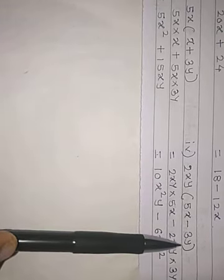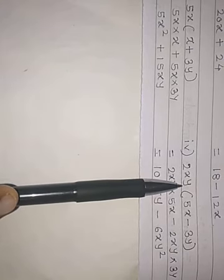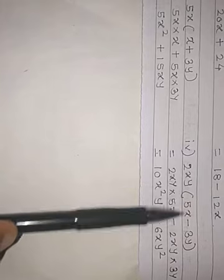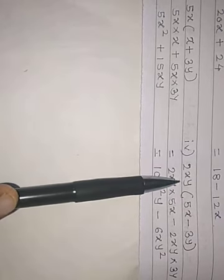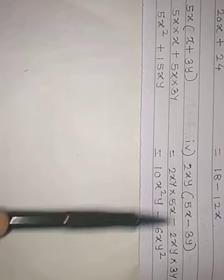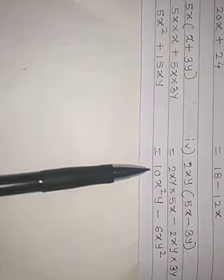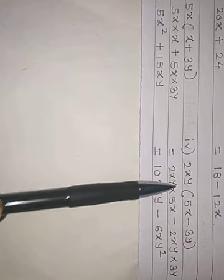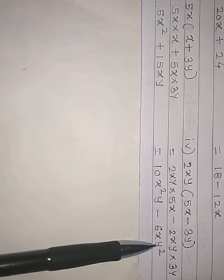Next example: xy is outside the bracket and 5x minus 3y inside. We have 2 variables here, x and y. So 2 into xy, that is 2xy into 5x minus 2xy into 3y. So 2 fives are 10, x into x is x squared, into y — minus 2 threes are 6, x as it is, y into y it will be y squared.